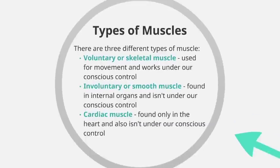We're going to look first at the three different types of muscles found within the body. The biggest range is what we call voluntary or skeletal muscle, which is the type we're most interested in for the exam. It surrounds the skeleton and is used mainly for movement, working under our conscious control — our brain has to send a signal to it, so we have to make a conscious decision for this muscle to work.